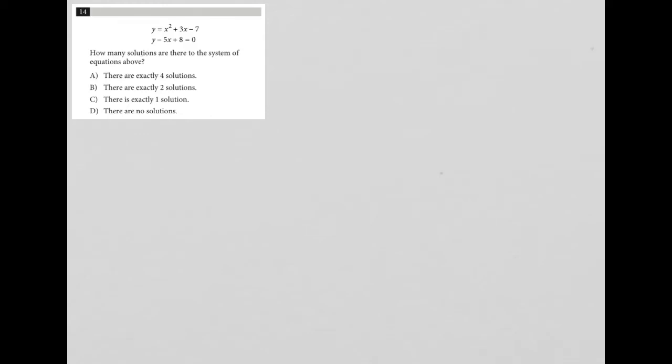So this question starts off by giving us two equations: y equals x squared plus 3x minus 7, and y minus 5x plus 8 equals 0. The question goes on to say,